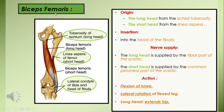Turning to the lateral hamstrings — biceps femoris is a two-headed muscle with a long head and a short head. The long head, along with other hamstrings, arises from the ischial tuberosity, while the short head is an exception and arises from the linea aspera near the lateral lip. The insertion of biceps femoris is on the head of the fibula; this insertion is interrupted by the fibular collateral ligament, and there is an extension of the insertion onto the tibia as well.